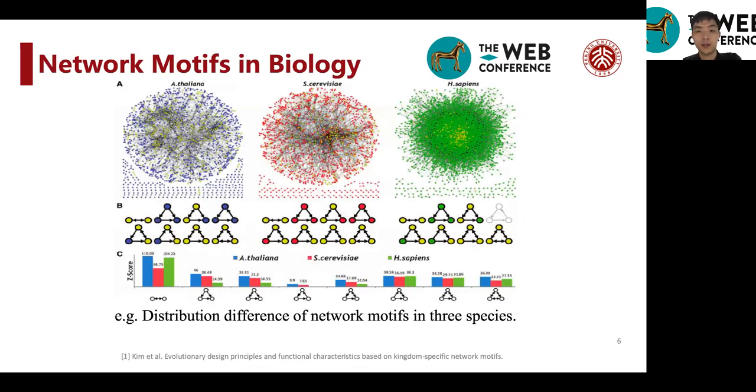This is the example of network motifs in biological networks. As can be shown, there are three species and form different networks between species. And as can be shown in the figure below, the distributions of network motifs in different species are highly different.